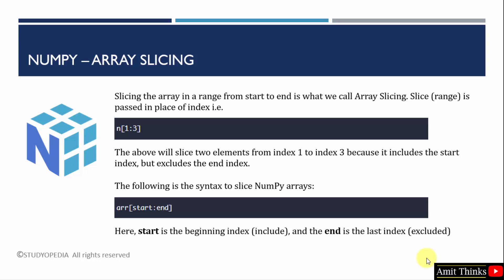Array slicing basically means to slice an array in a range from start to end. Here we have shown — let's say you want elements from index 1 to 3. For that, you need to mention the range: 1 colon 3. That means from start to end — the start index is the first one and the end is the last one. But you need to remember the end index is excluded; it includes the start index but excludes the end index.